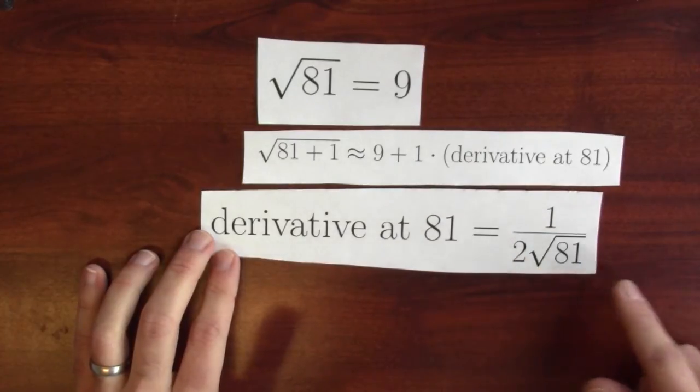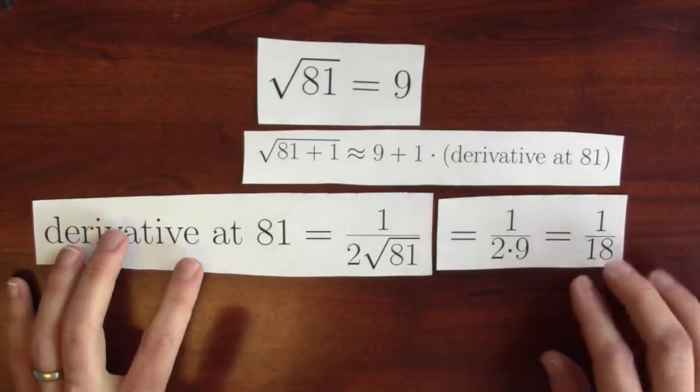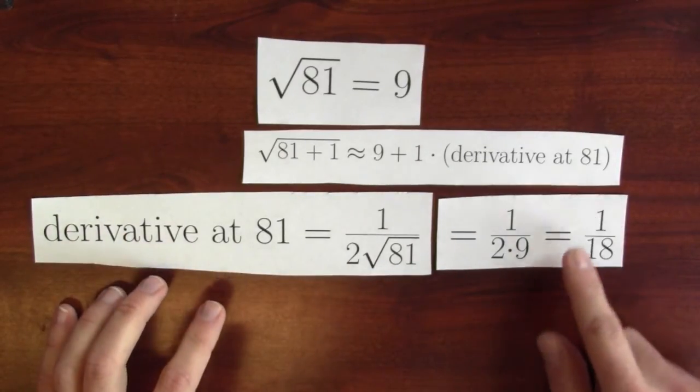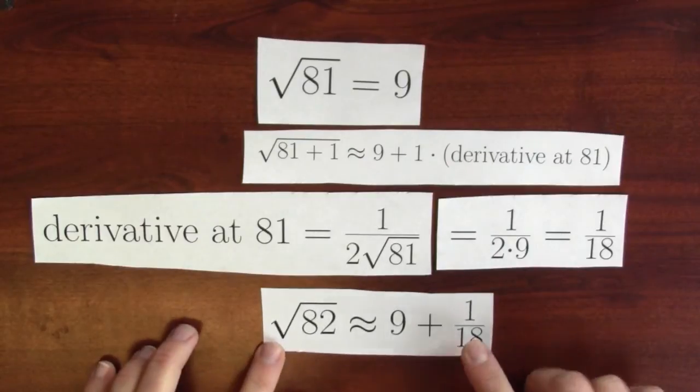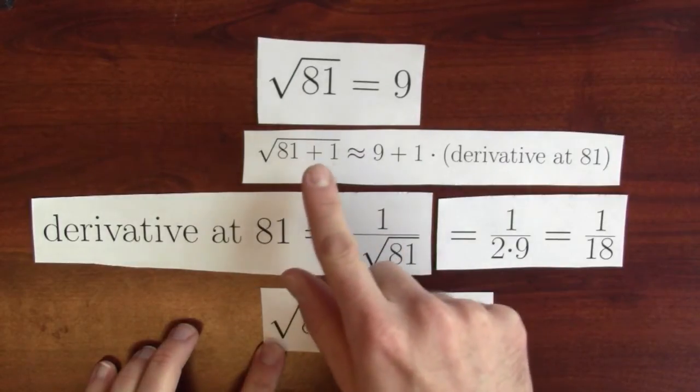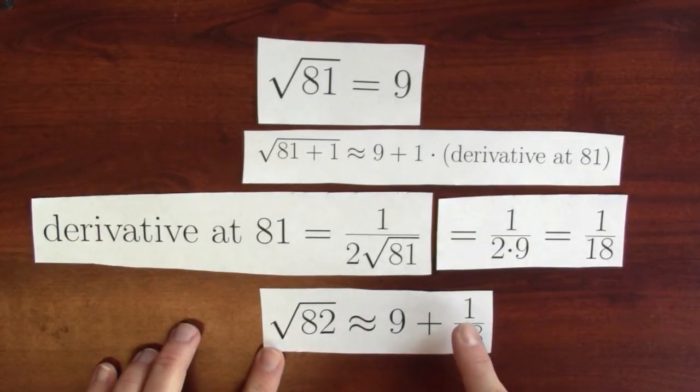Well, that's 1 over 2 times the square root of 81, which is 1 over 2 times 9, the square root of 81 is 9, which is 1 18th. So I would expect the square root of 82 to be about 9 plus 1 18th. Because I expect wiggling the input up to wiggle the output up by about 1 18th.